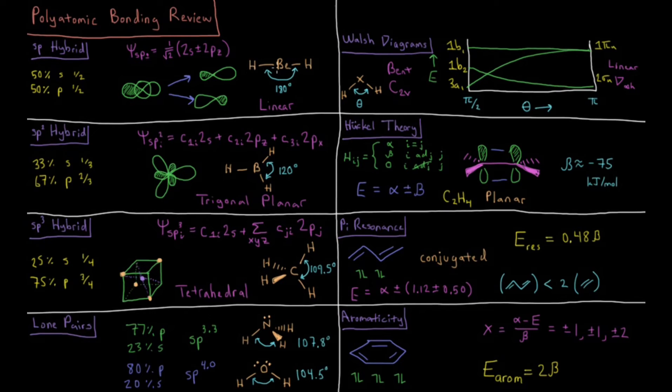At 180 degrees, we have beryllium hydride. At 104.5 degrees, we have water. So the question is, why is water bent and beryllium hydride straight? We can use Walsh diagrams and the orbital energies versus theta to figure out why that is in that video.